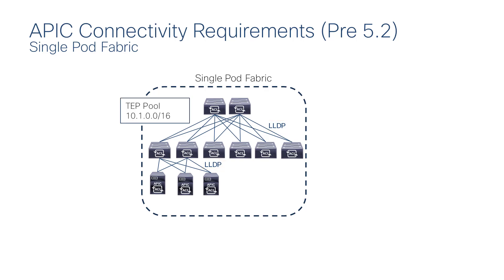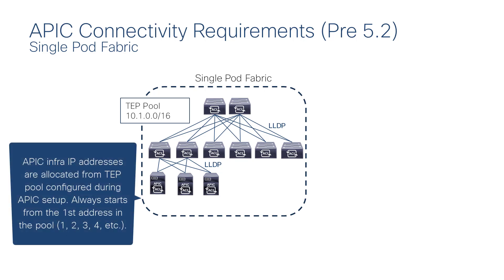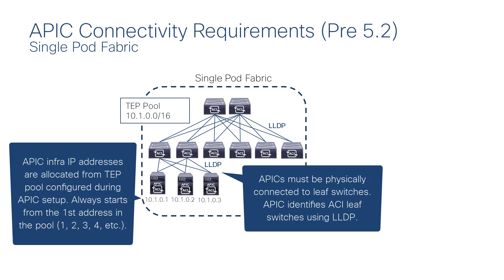During setup of the APIC cluster, the TEP pool for the pod is entered. In this example, we have 10.1.0.0/16 as the TEP pool. All APICs in a directly connected APIC cluster will have their fabric IP addresses assigned from this TEP pool, always starting from the first IP address — .1. So here we have three APICs: these would be .1, .2, and .3. APICs physically connected to the leaf switches use LLDP to discover the leaf switches and the remaining leaf and spines within the fabric.